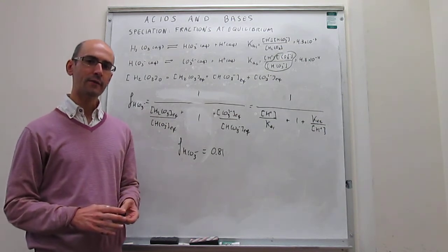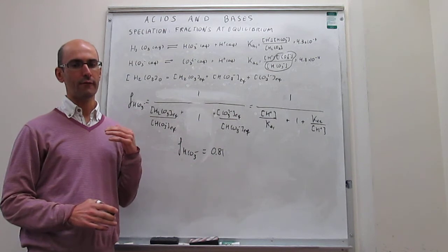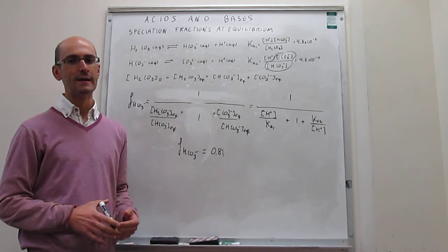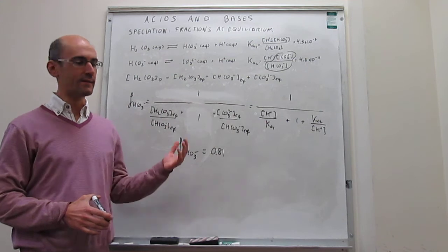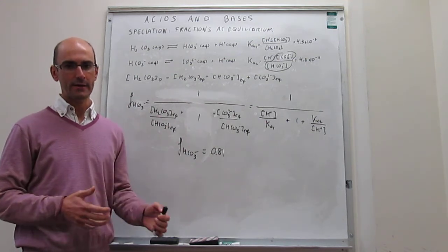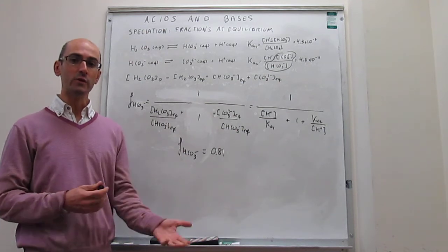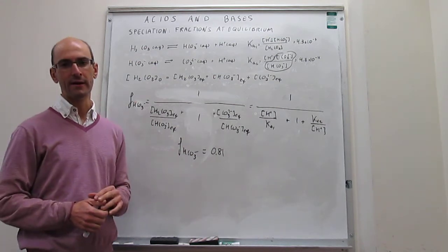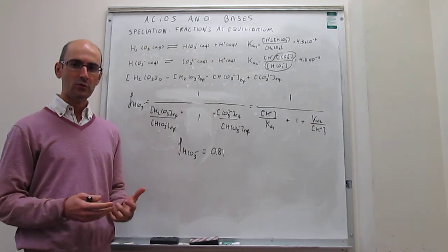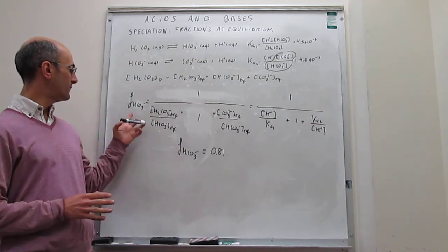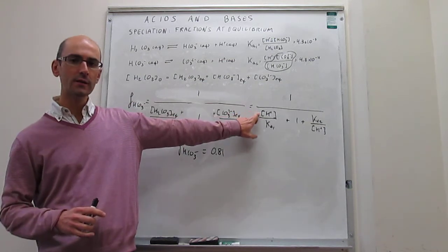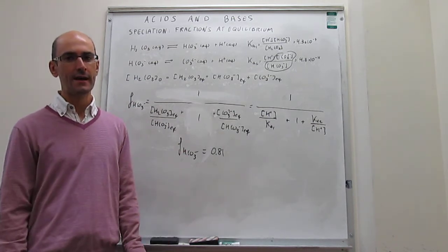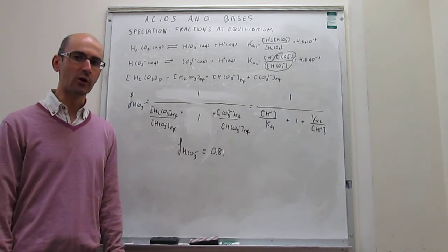In this video we have talked about speciation. When an original substance can undergo successive dissociations, you have a host of possible species — in this case, carbonate-containing species. It is very useful to know which species is dominant at a particular pH. We defined the fraction of bicarbonate at equilibrium and derived a convenient expression that depends only on pH and the acid dissociation constants. At neutral pH, bicarbonate is dominant with an 81% contribution to the total.